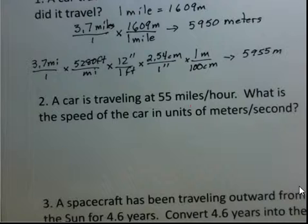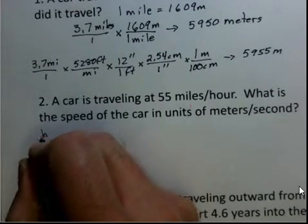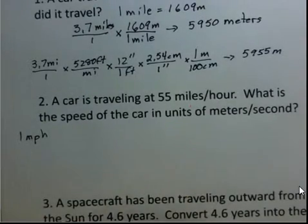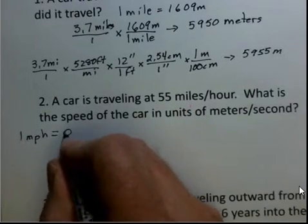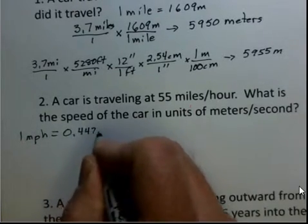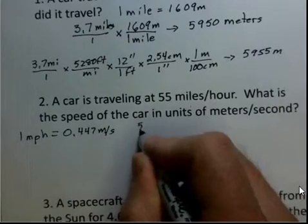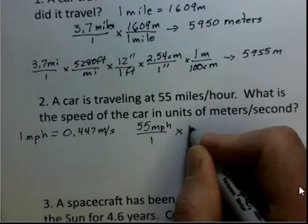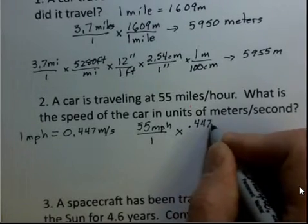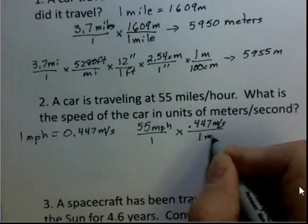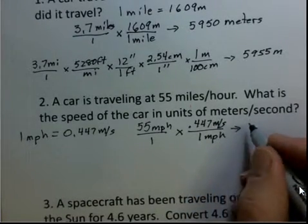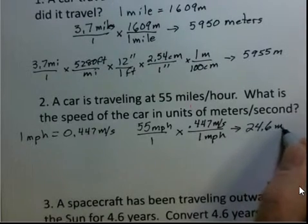The second one, 55 miles per hour. We want to convert that to meters per second. And again, looking in a book, you'll find 1 mile per hour is equivalent to 0.447 meters per second. We have 55 miles per hour over 1 times 0.447 meters per second is 1 mile per hour. And using a calculator, you come up with 24.6 meters per second.